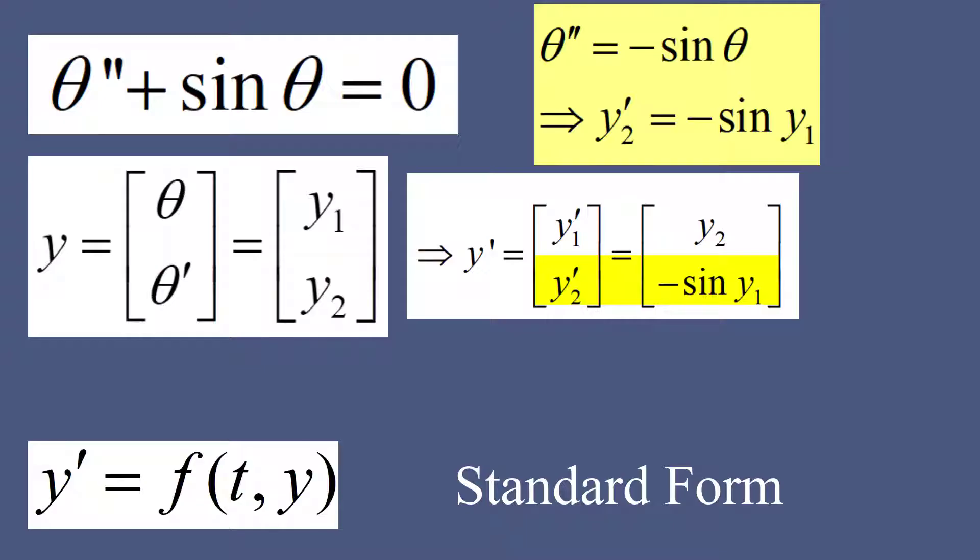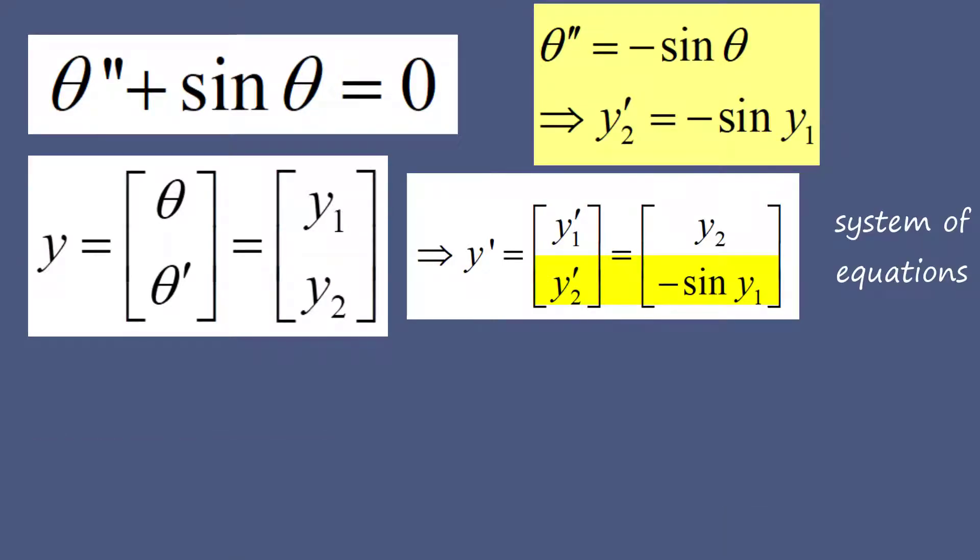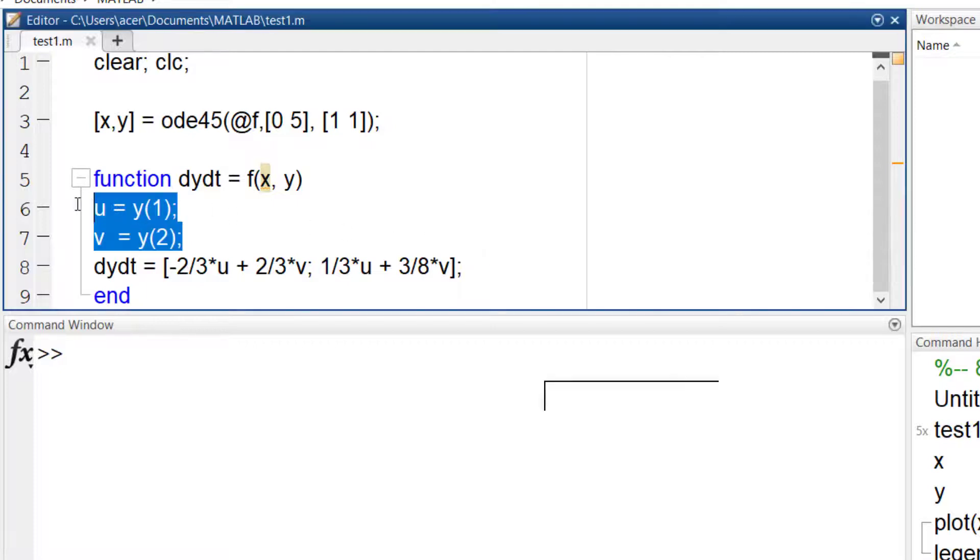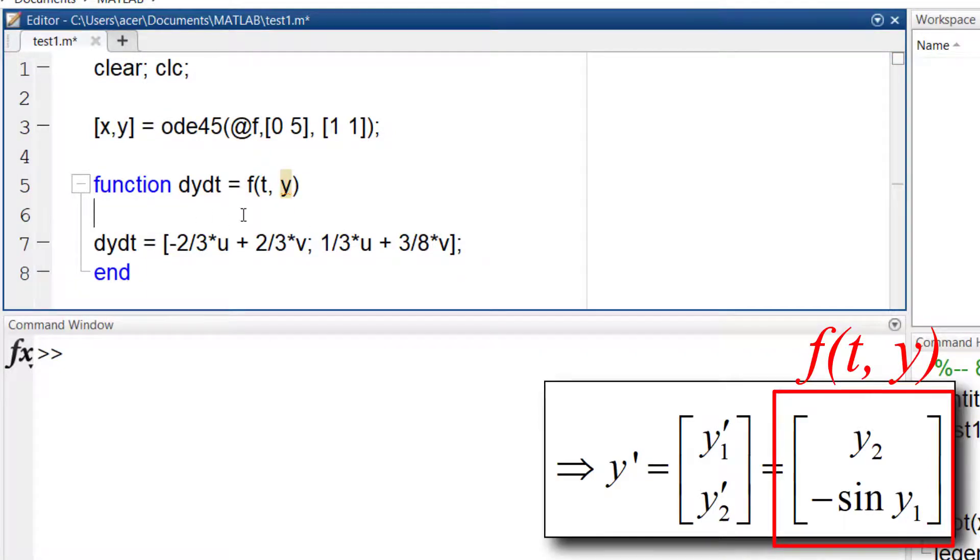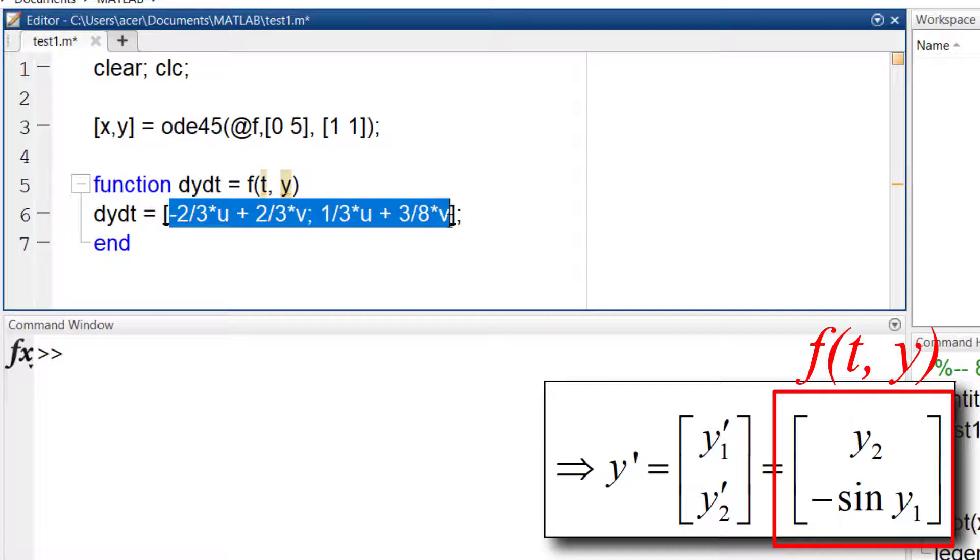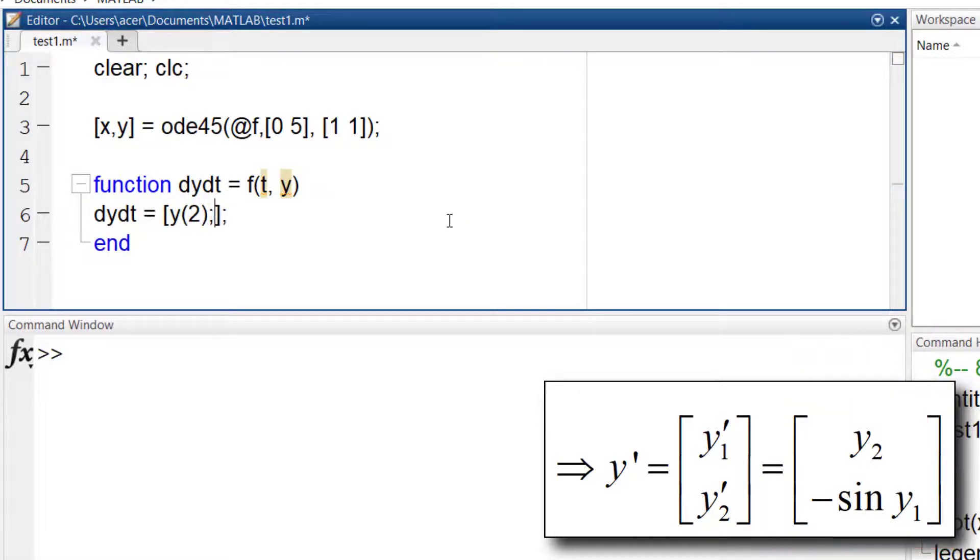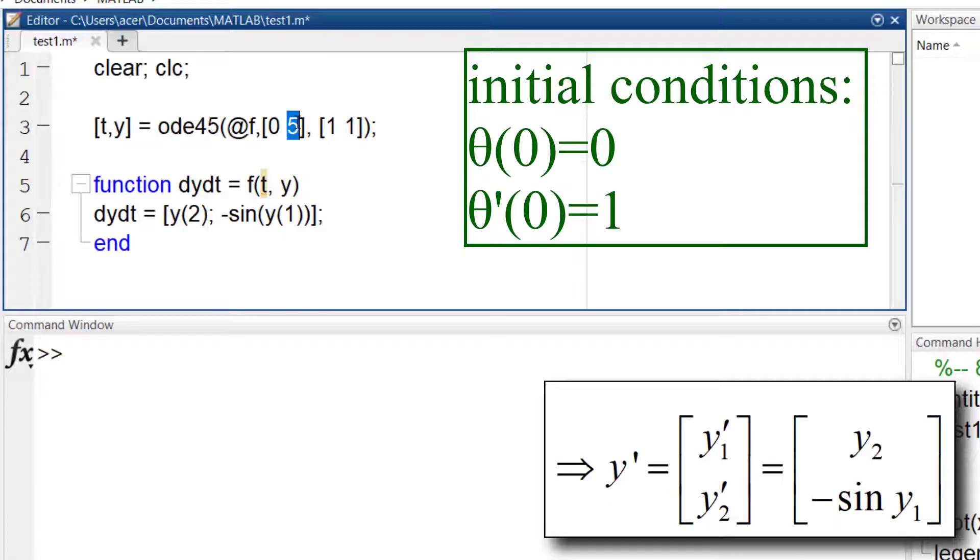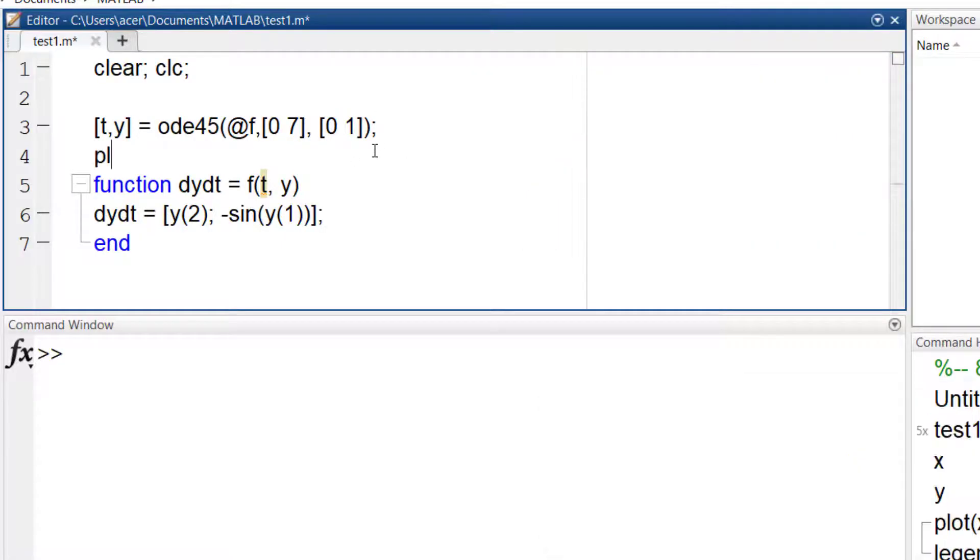Now I want to write two equations in this form. y1 prime is equal to y2 and y2 prime is equal to negative sine of y1. It is obvious that both of these equations are in the standard form. Now we can easily solve this system of first-order differential equations. First I define my function f. Now I solve the ODE for seven seconds and apply the initial conditions too. I also plot theta and theta prime.